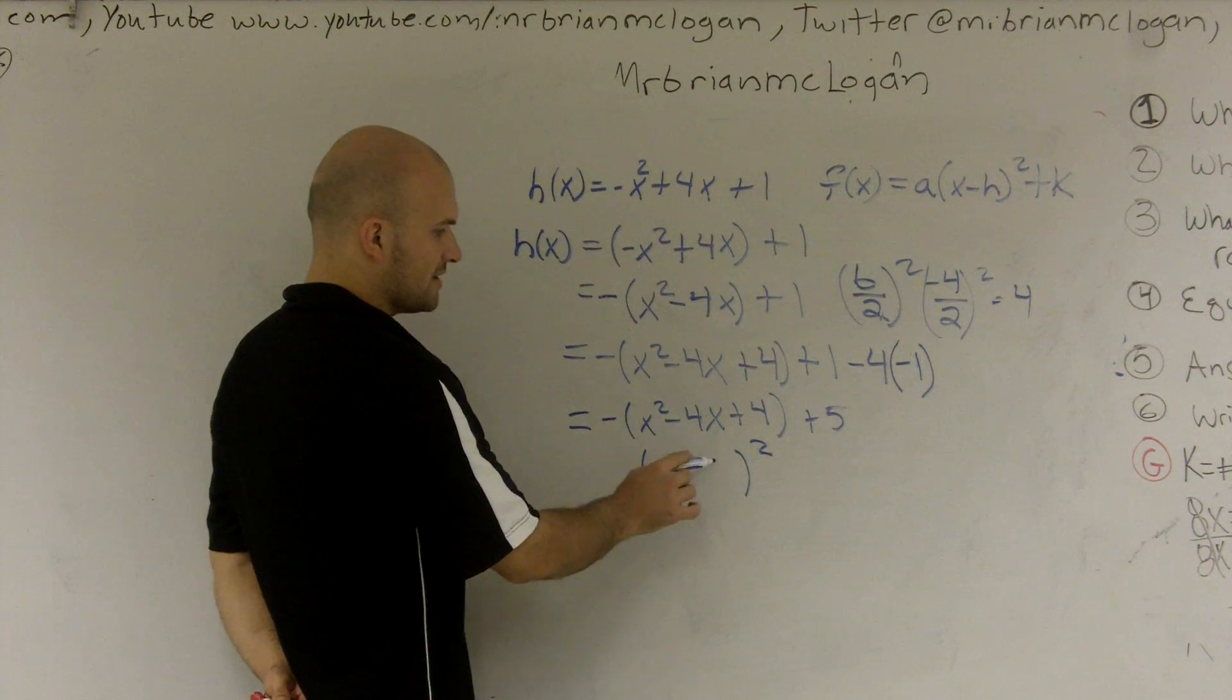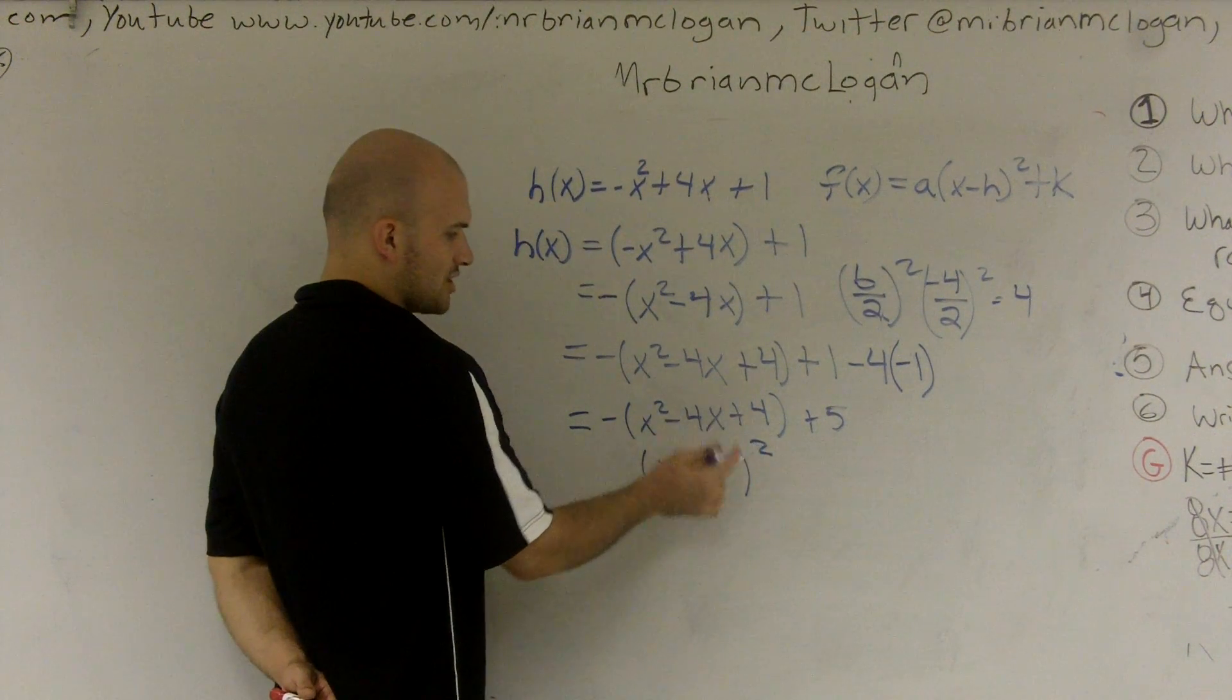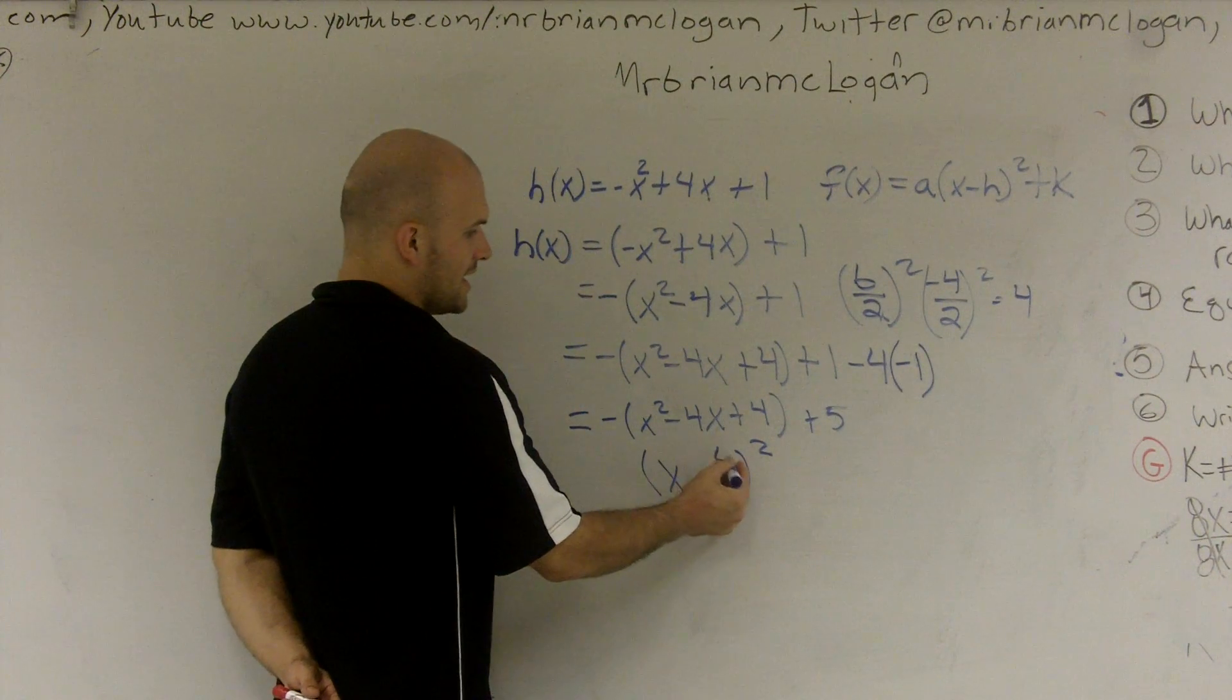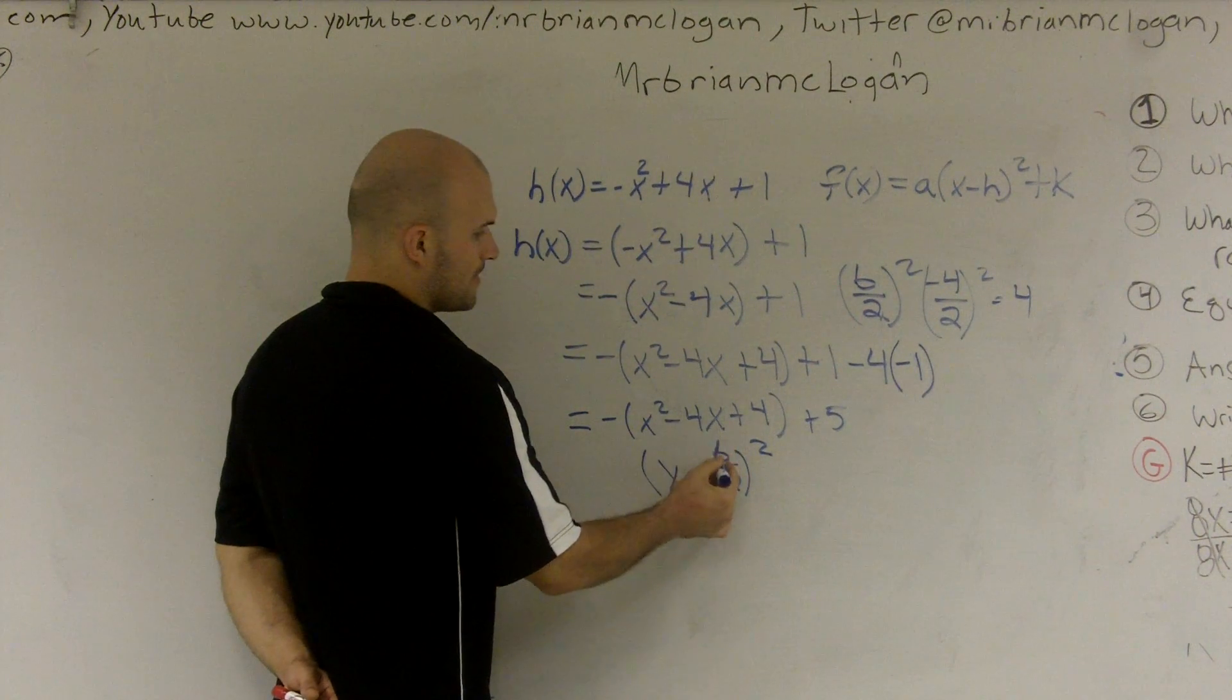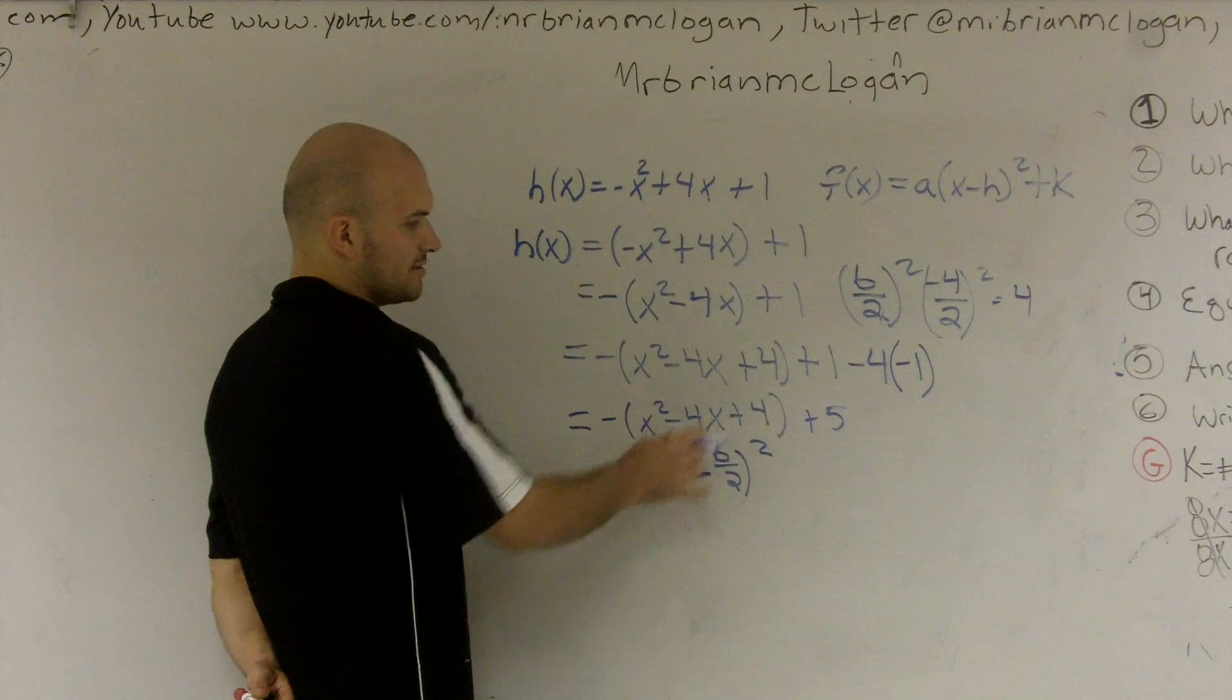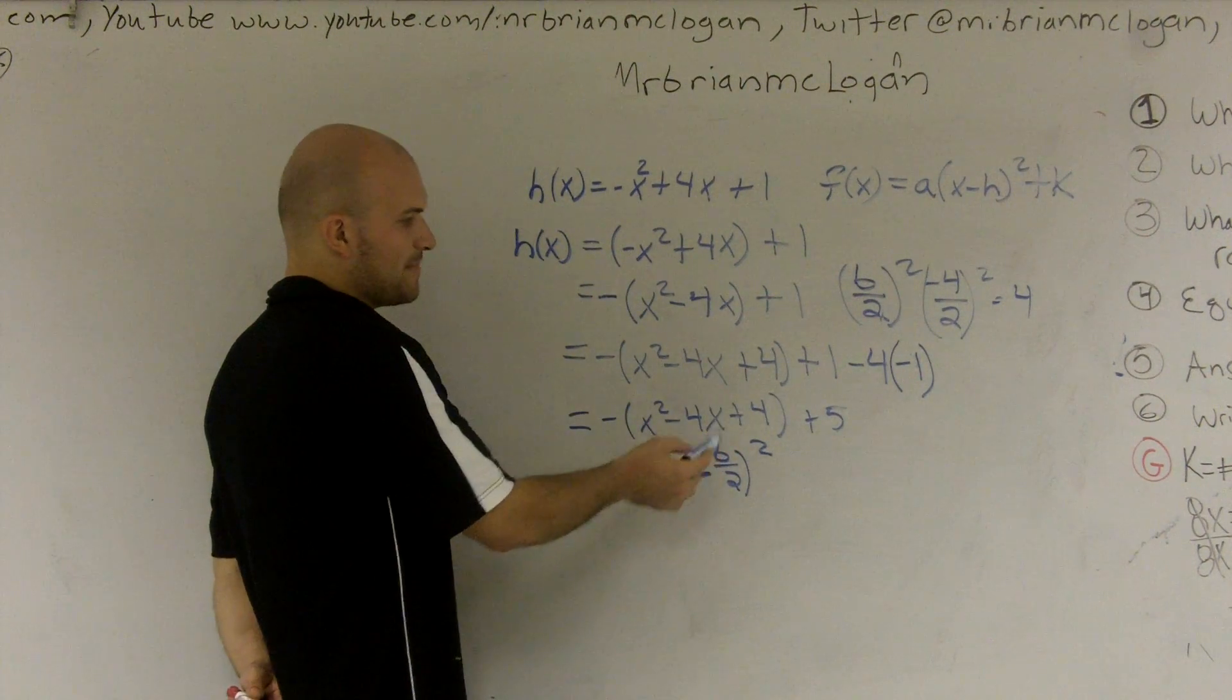And I look at how can I write this as a binomial square? Well, to figure out this value, you can take whatever your middle term is. You're going to use that sign. And if you just take b over 2 and you'll square it, then you'll get your trinomial. So what was my b over 2?